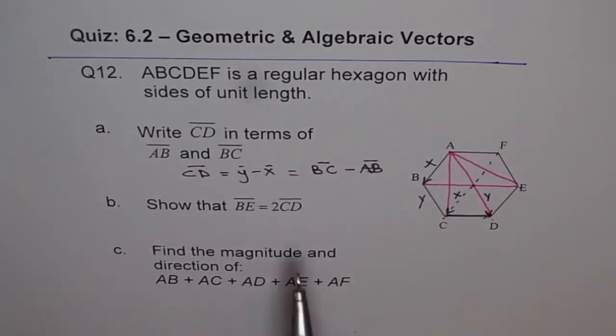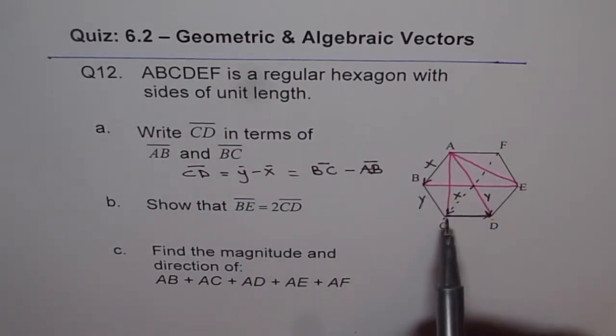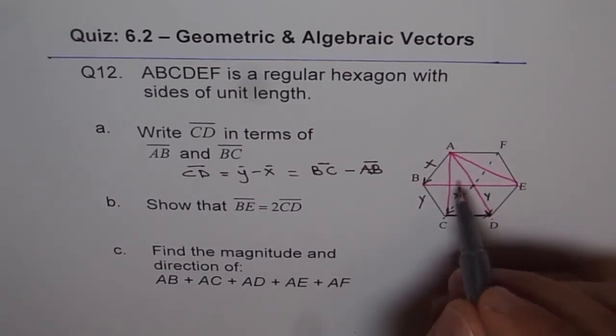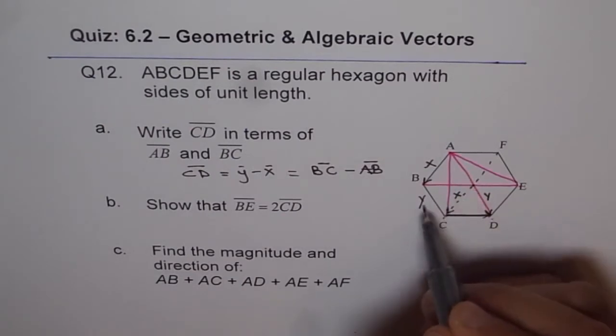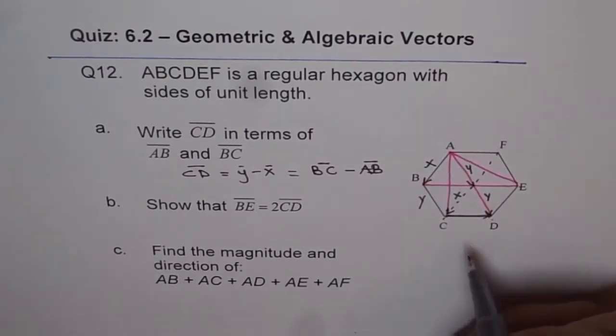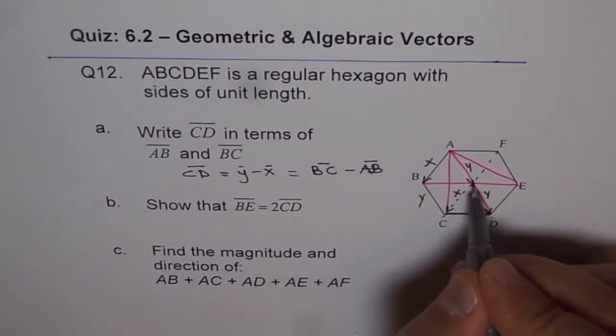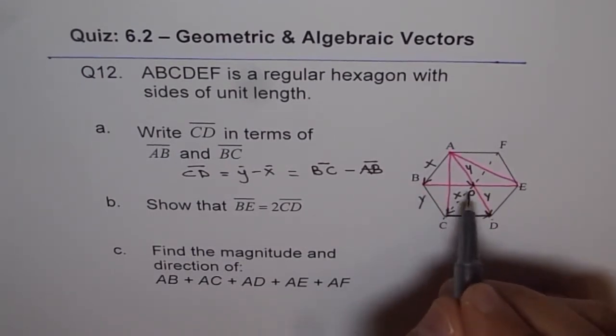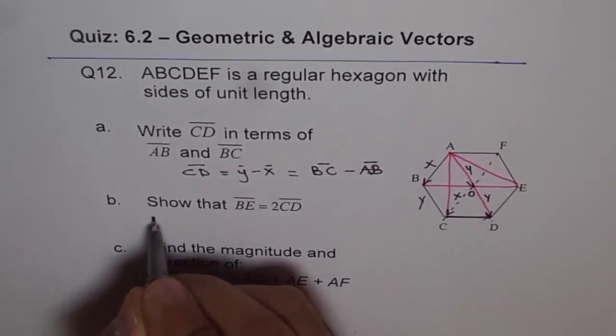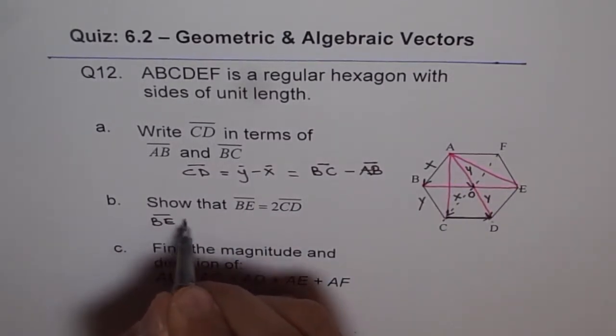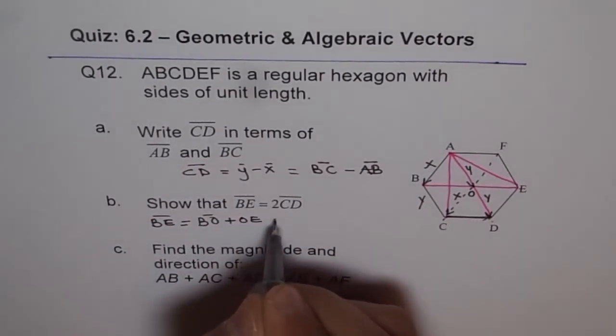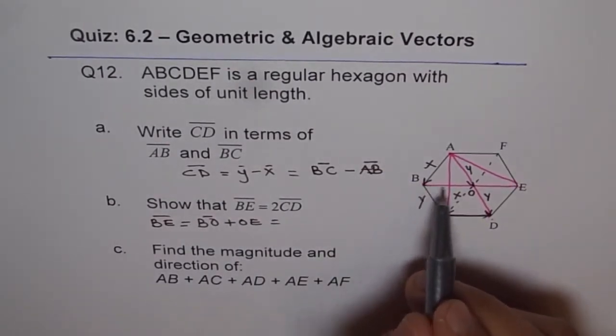Now we have to prove that BE is twice CD. For BE, we can say this is X and this one is Y because this is parallel to this. Let me call this point center as O. So BO plus OE is BE. Let me write BE equals BO plus OE.